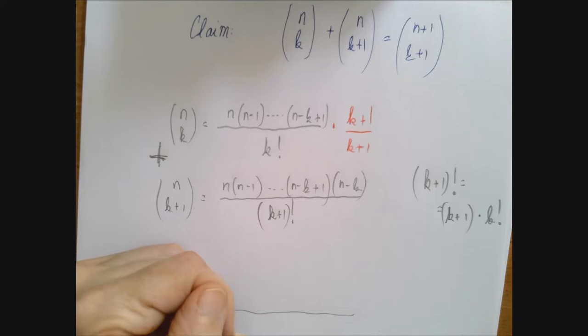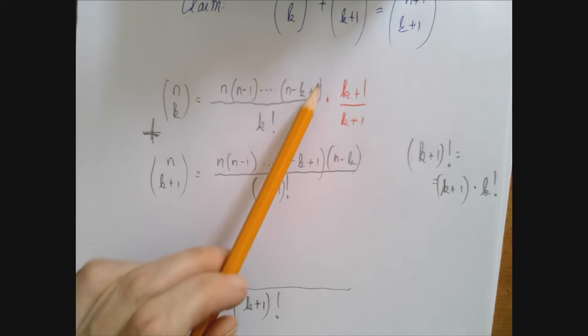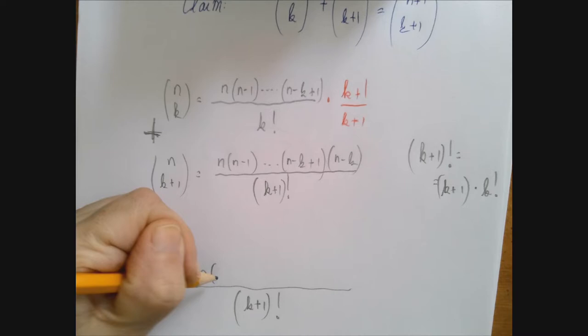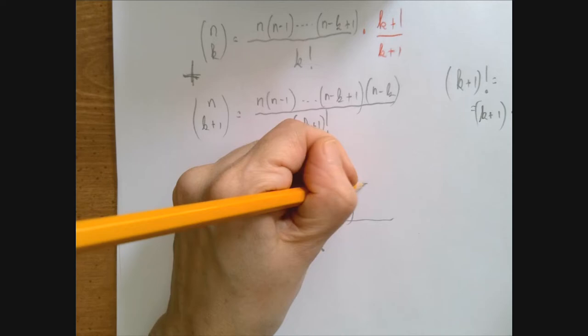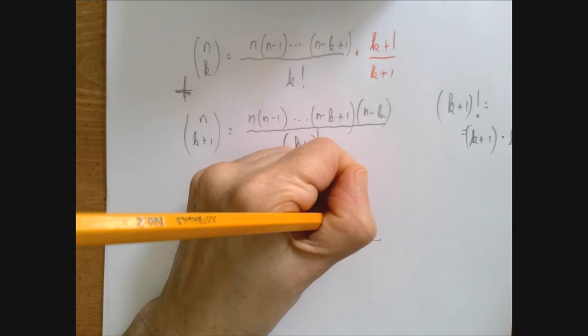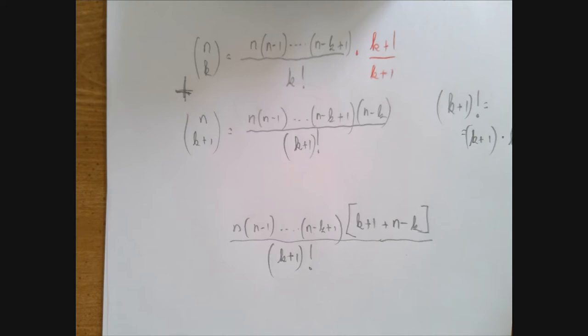And so now we're going to add the two and we have a common denominator, k plus 1 factorial. And on the numerator we have a gigantic common factor. All these are part of the common factor. So we're going to factor that out right away, n times n minus 1. So that's the common factor. And what is left is back there, there is an extra k plus 1 from the first expression and an extra n minus k from the second expression. K cancels out and what we're left with is n plus 1.